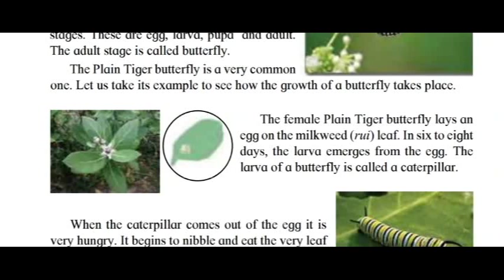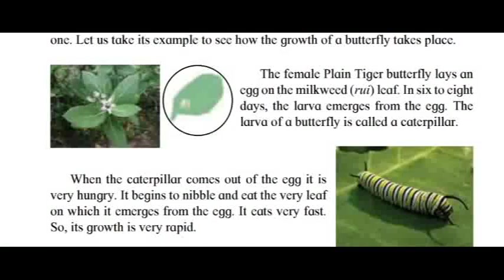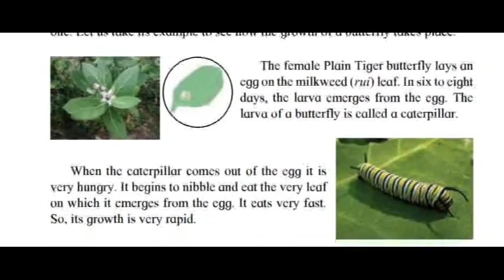Let us take the plain tiger butterfly as an example to see how the growth of a butterfly takes place. The female plain tiger butterfly lays an egg on the milkweed leaf. In six to eight days, the larva emerges from the egg. The larva of a butterfly is called a caterpillar.